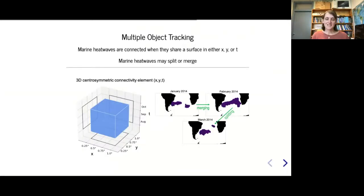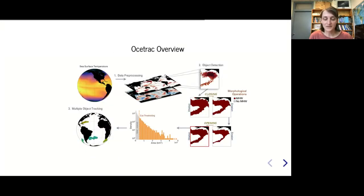Once we have labeled objects, the final thing is to track them in space and time. We define a connectivity element, essentially a cube, and where objects are connected in either x or y (lat or lon) and time, they share the same ID. Marine heat waves can merge or split, and the marine heat wave remembers the history of where it was and where it's going. The ID continues through the life cycle of the event.